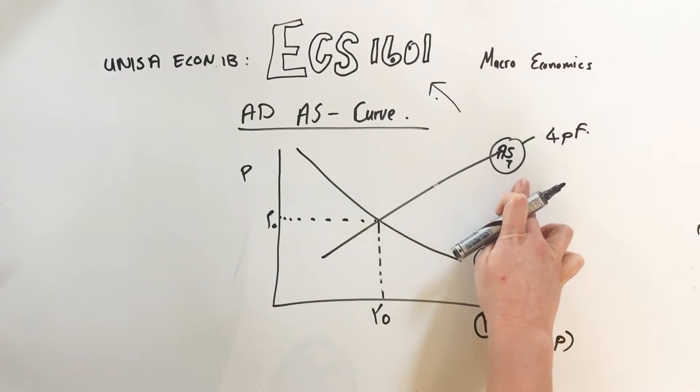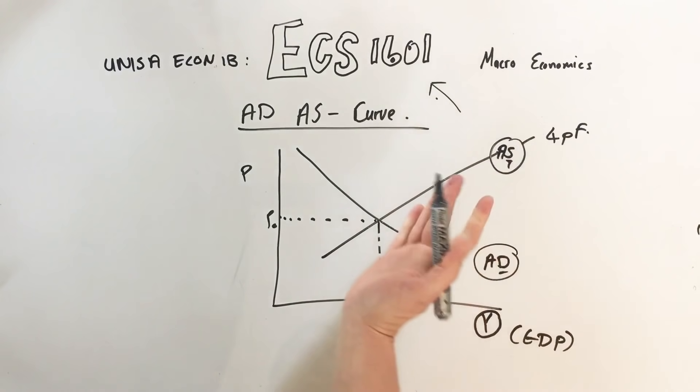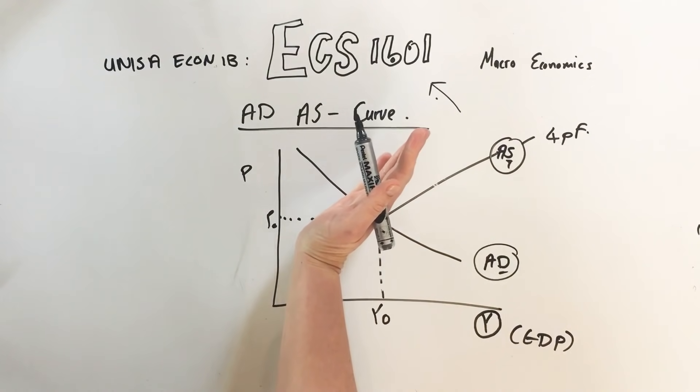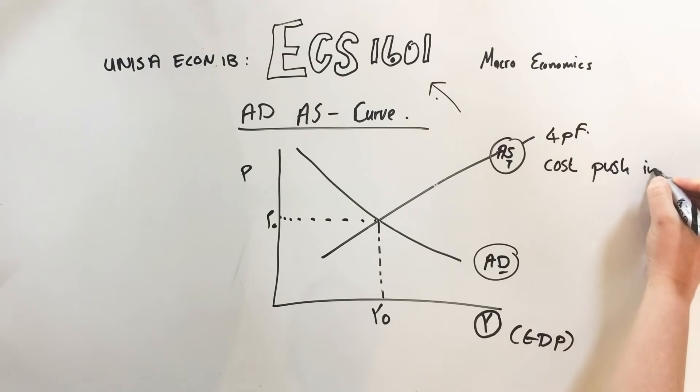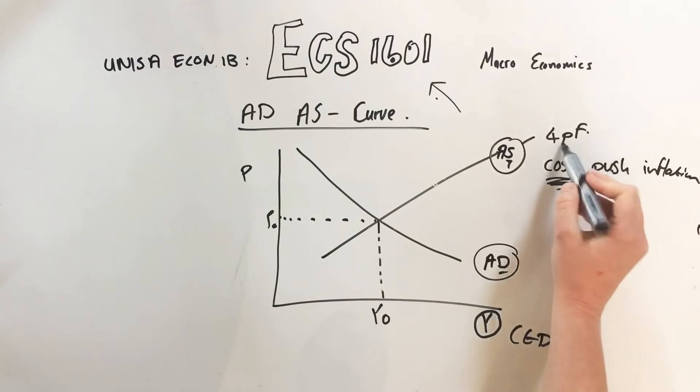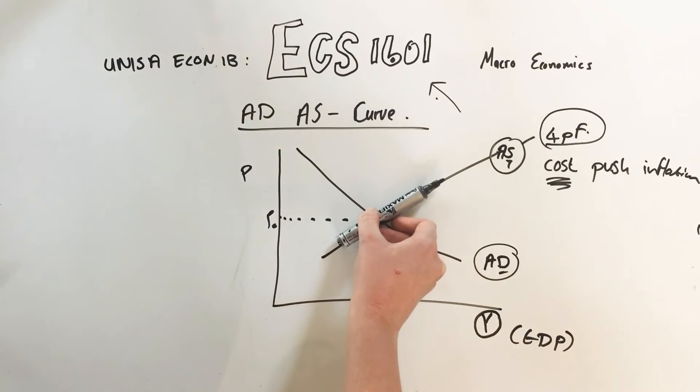If it moves, if it goes up, it's a cost push inflation. Cost push inflation. So whatever influences the four production factors is the cost of supply, and if it goes up it's cost push inflation.